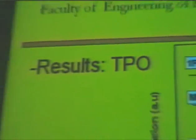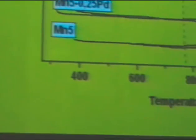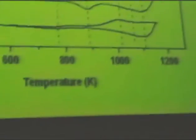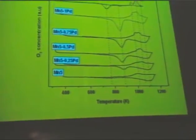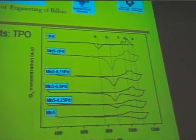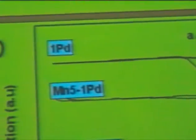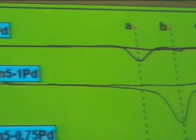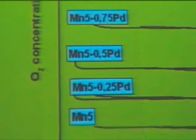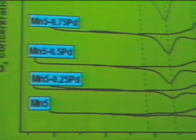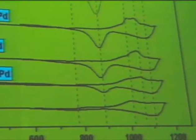The results of TPO for the monometallic palladium: it is observed during the heating three positive peaks C, D, and E. These peaks correspond with the decomposition of the different palladium oxide species to metallic palladium.